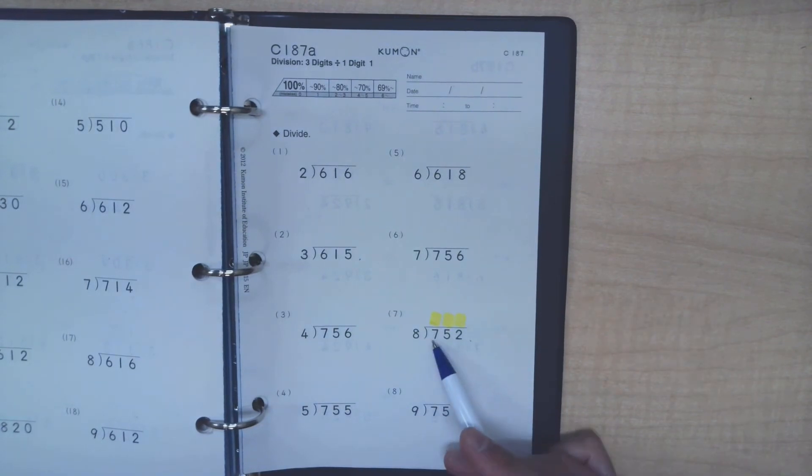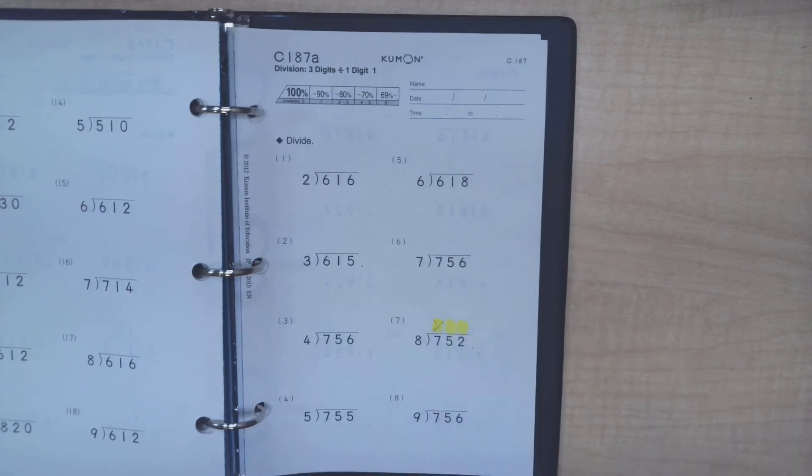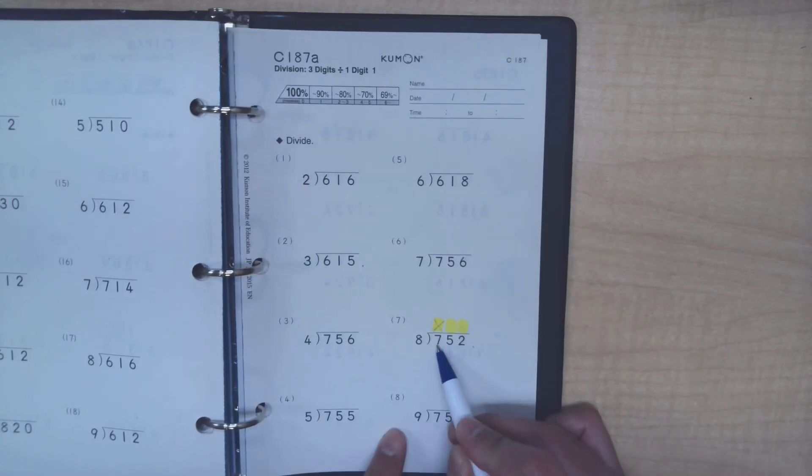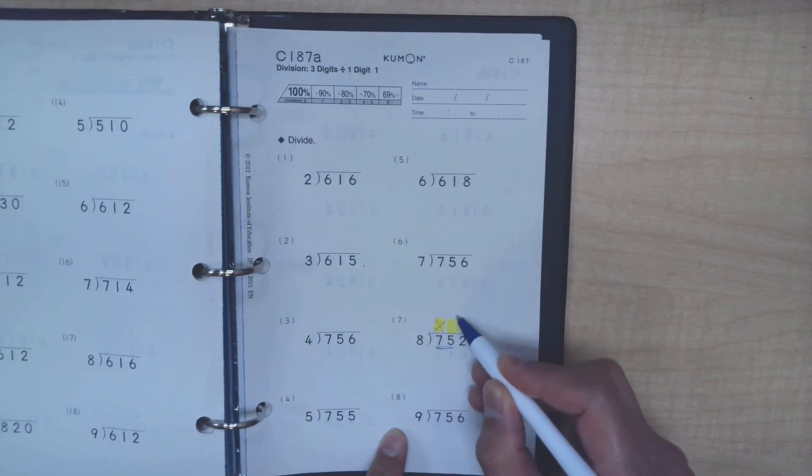Can the 8 go into a 7? No, and we talked about this in the previous video, so we are going to skip that number. We are not going to use that space, but the 7 does not disappear, so we have to still work with 75 on this next spot.